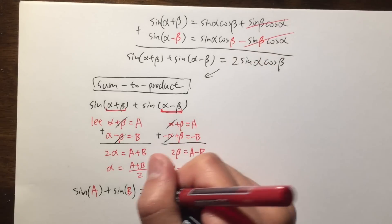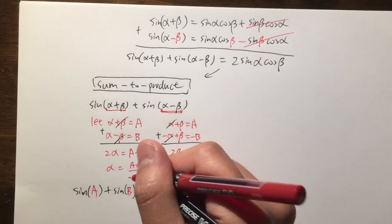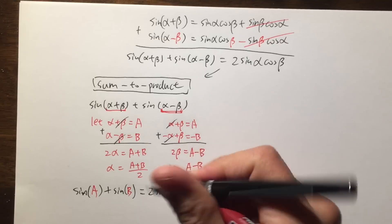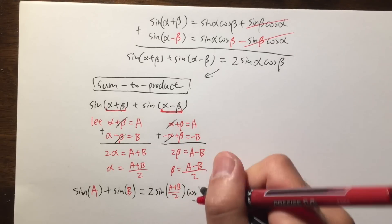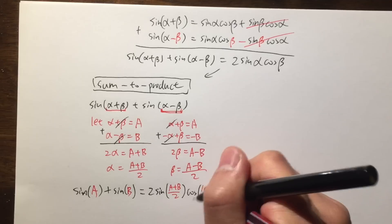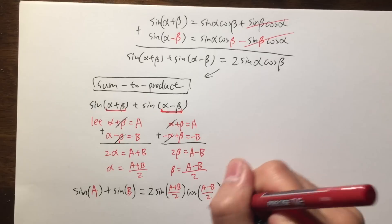And this is equal to, on the right hand side, we have 2 times sine of alpha, which we know is A plus B all over 2. And then we multiply this by cosine of beta, which is that. Cosine of A minus B all over 2 like this. And as you can see,